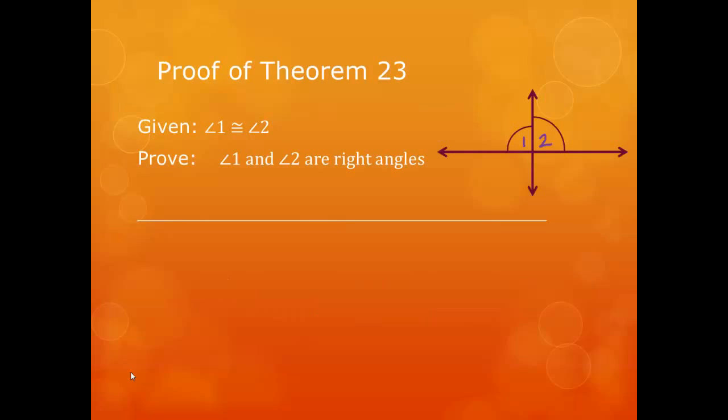Okay, now, like I occasionally like to do, we're going to prove this theorem. So we are given that angle 1 is congruent to angle 2, and we need to prove that angle 1 and angle 2 are right angles. So we're given this: angle 1 is congruent to angle 2. Now, before I move on, notice that there's something missing.